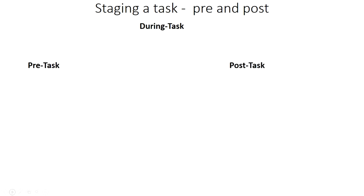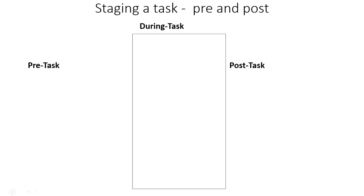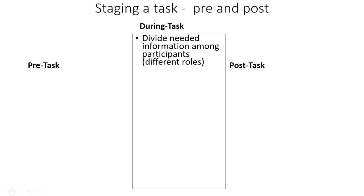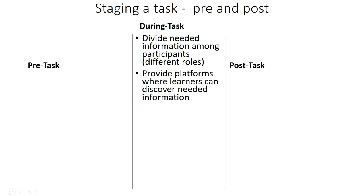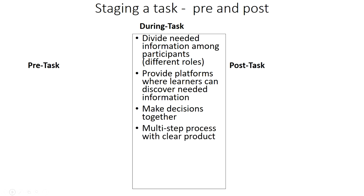A task is made up of three parts: a pre-task, a during-task, and a post-task. The during-task is definitely mandatory, and it usually works best if there's some kind of a gap — you divide information among participants by giving them different information, different roles, or drawing on their different real-life experiences. You provide platforms where learners can discover needed information. The task uses the target language to make decisions together, and they use what they each know to accomplish the task collaboratively.